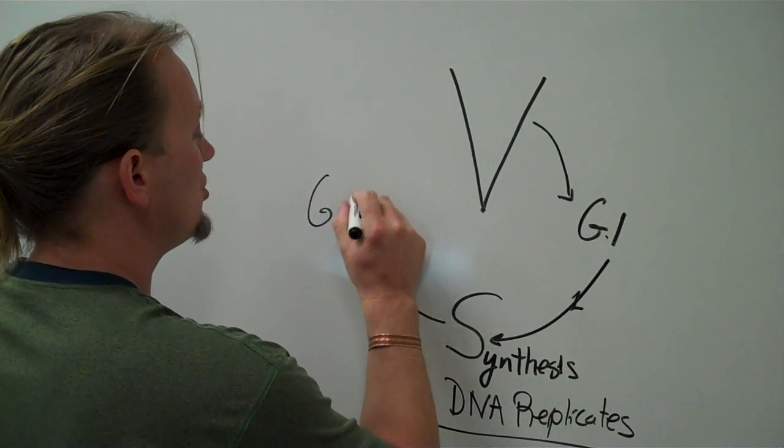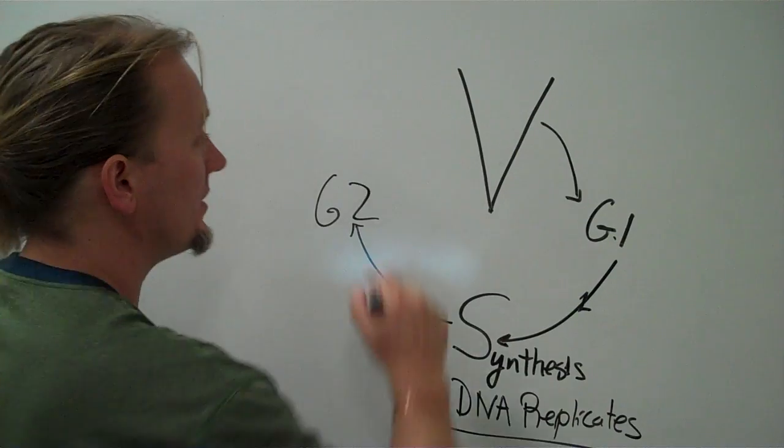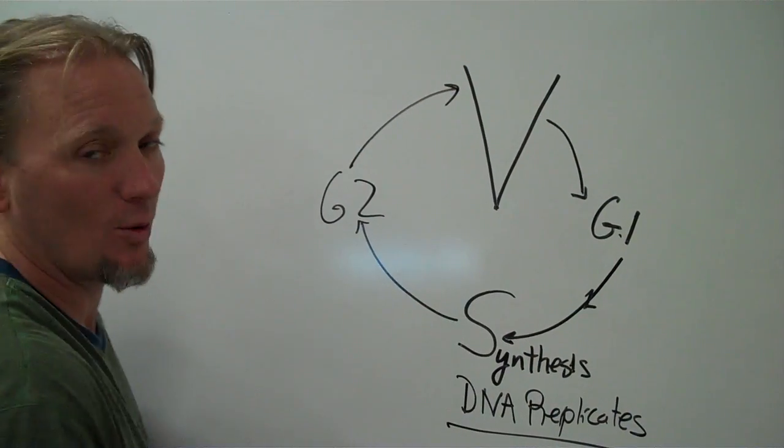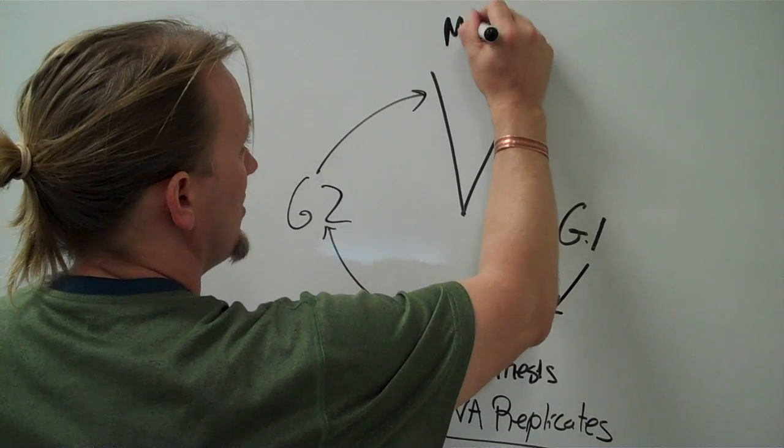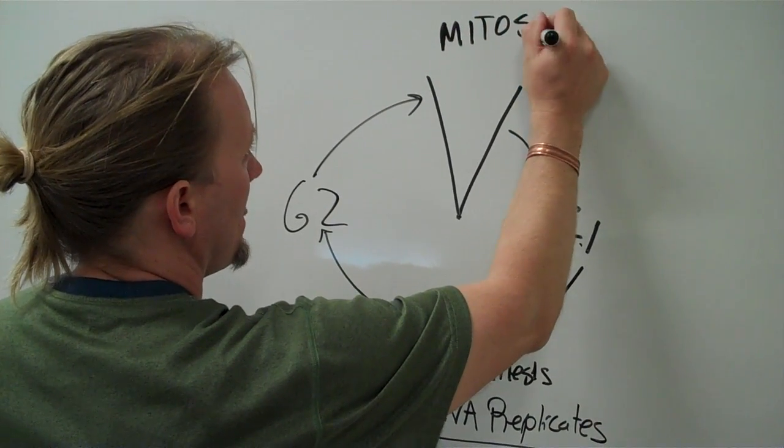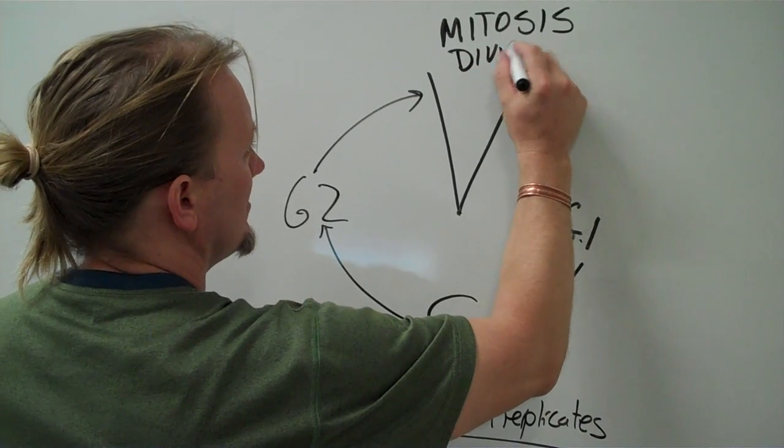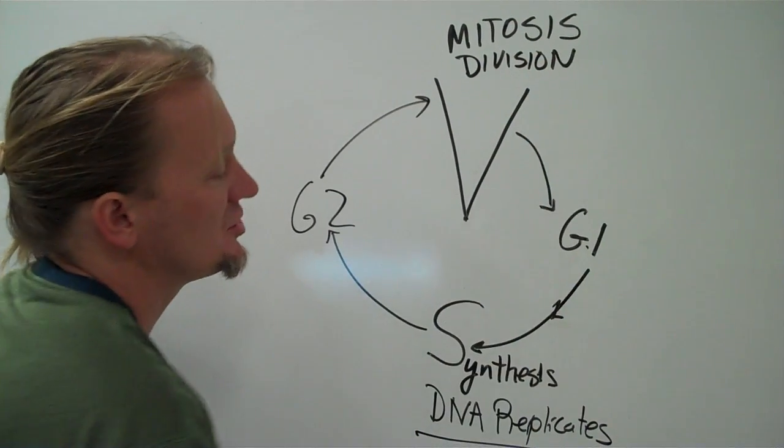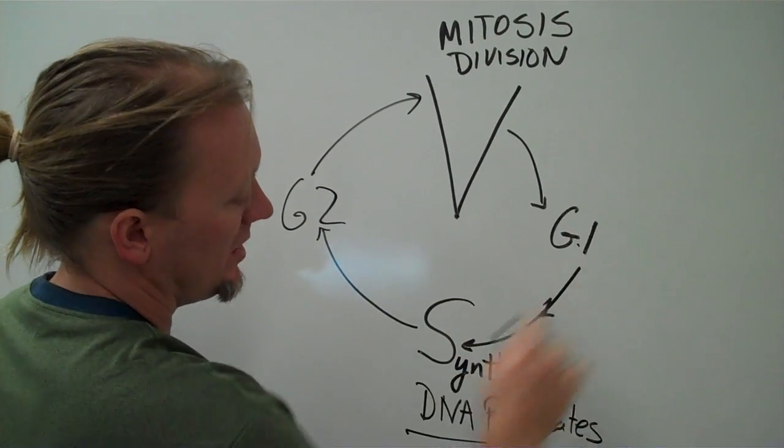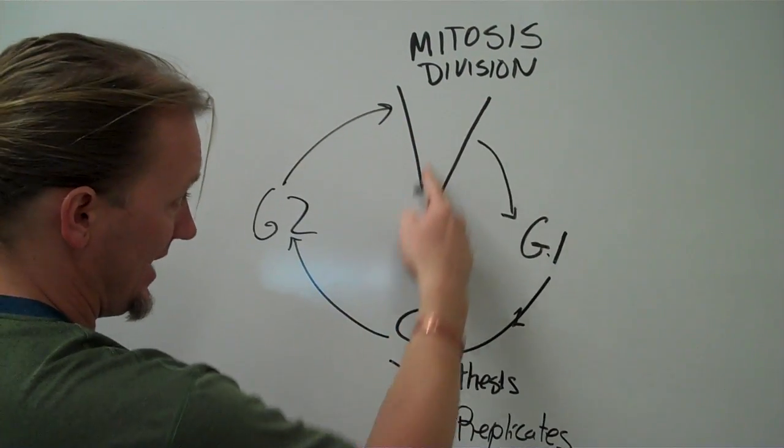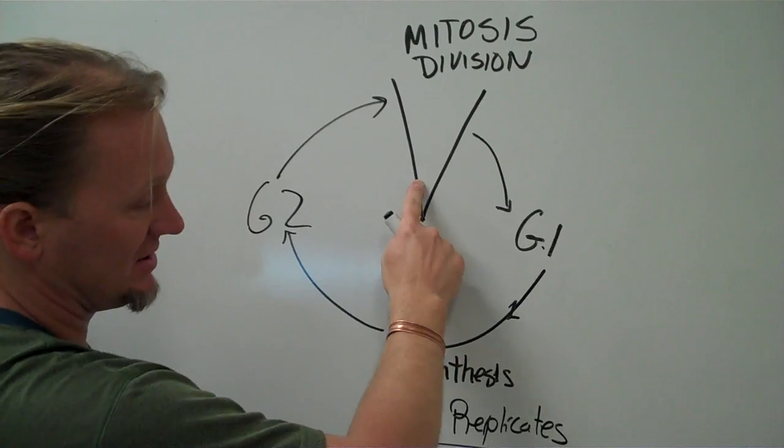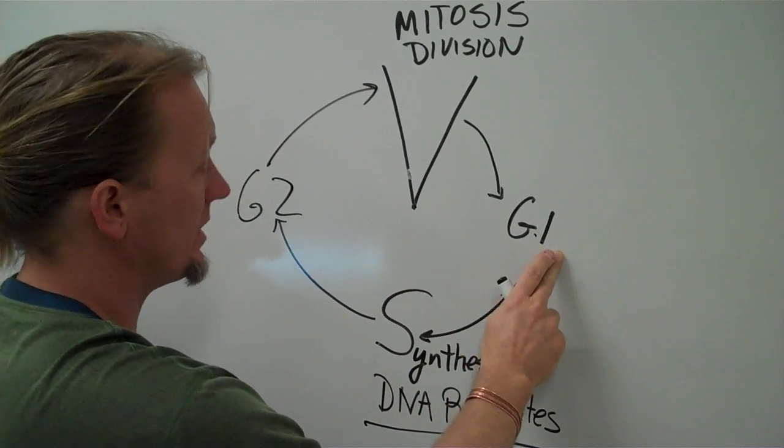We go into G2 here, more normal cell living. And then over here, during one small period of time, is during the mitosis part, which is the division. So this single cell goes G1, then it duplicates its DNA, it does some more living over here, and then it divides into two cells, and then each of those cells then starts back in G1 again.